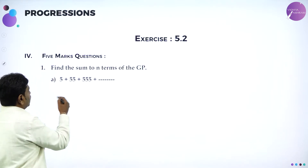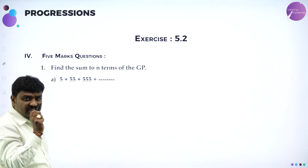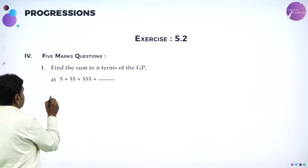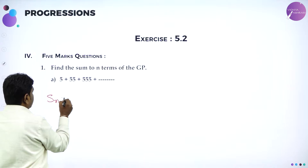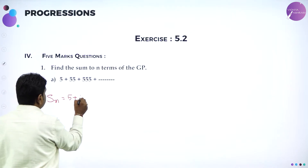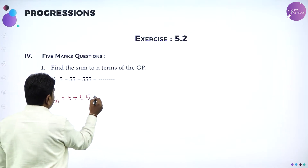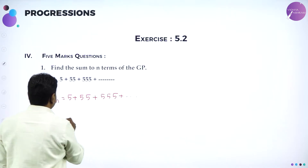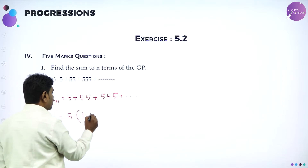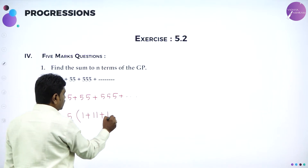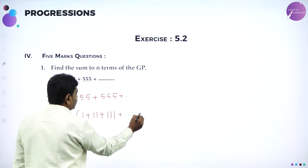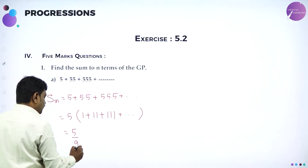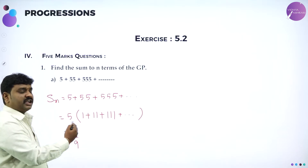Let me take the problem 5+55+555 and solve. They want you to find the sum of n terms in GP. Now here the terms are not in geometric progression exactly, so we need to convert it. So Sn is equal to 5 plus 55 plus 555 plus so on. Now I will take 5 common — it will become 1 plus 11 plus 111 and so on. Now you can see: divide and multiply by 9.